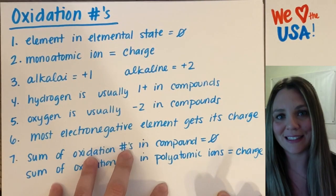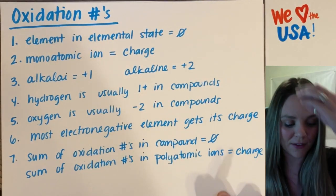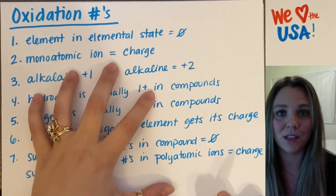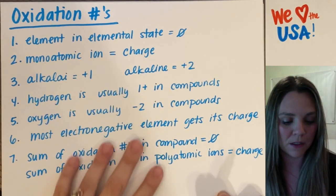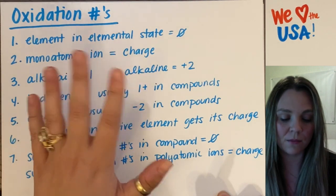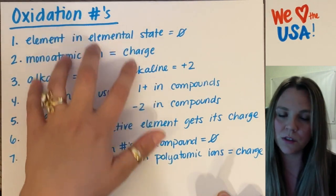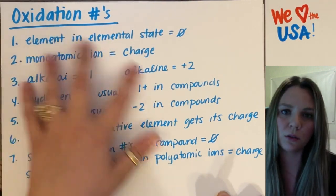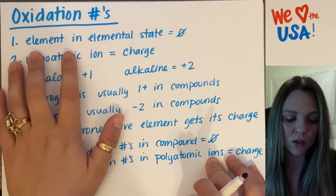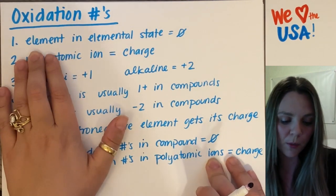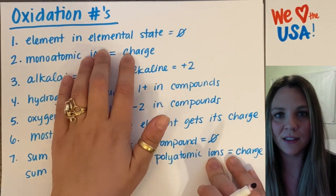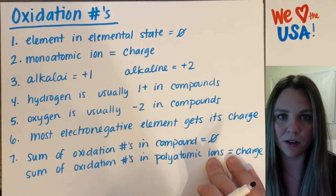There's actually a nice list of seven different rules to assign oxidation numbers to different elements. It'll be most helpful to go through them one by one and do examples as we go. Rule number one: elements in their elemental state have an oxidation number of zero.